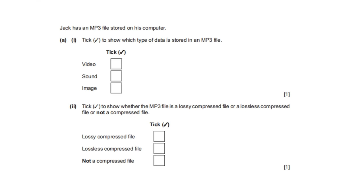Jack has an MP3 file stored on his computer. Tick to show which type of data is stored in an MP3 file — in an MP3 file we store sound. Tick to show whether the MP3 file is a lossy compressed file, lossless compressed file, or not a compressed file. MP3 is a lossy compressed file.